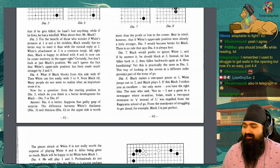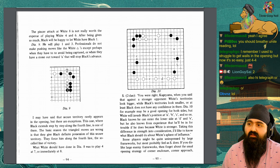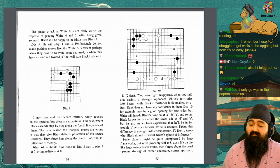From the standpoint of struggling to get ahead, for example, black 3 is just perfect. The pincer attack at white 8 is not really worth the expense of playing white 4 and 6. After being given so much, black will be happy to let white have black 1.